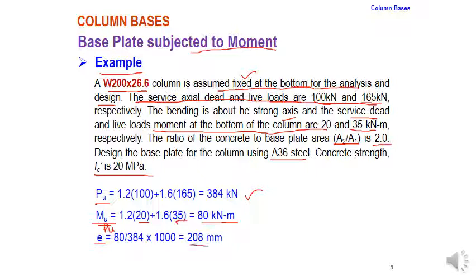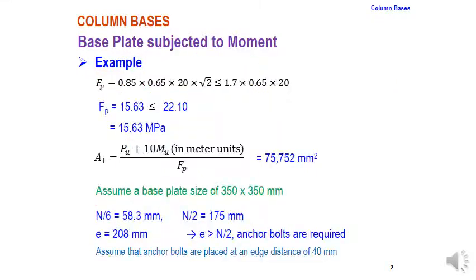Eccentricity e = Mu / Pu = 80 / 384 = 208 mm. This e value is the first step per the design procedure. Keep this eccentricity; in the next step we calculate the bearing stress fp.